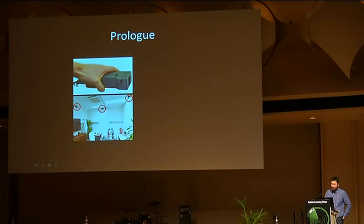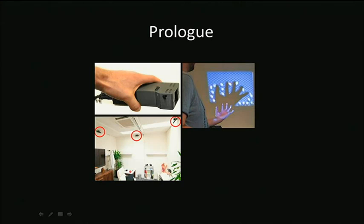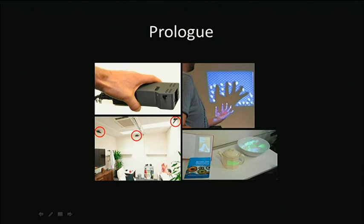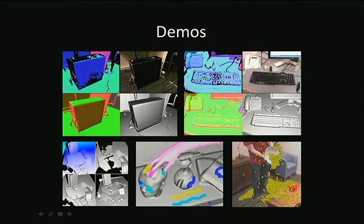These are pictures I forgot to show earlier. This is the initial prototype of the Pico projector — it relied on external trackers. And we wanted to get the result which is shown at the bottom right.